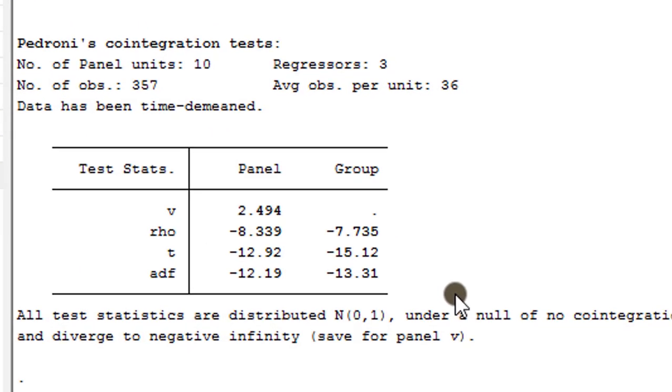Here we have the result for the Pedroni's co-integration test where we have seven statistics: v, rho, t, and adf. Out of the seven statistics, six show that the null hypothesis of no co-integration is rejected even at the one percent level.